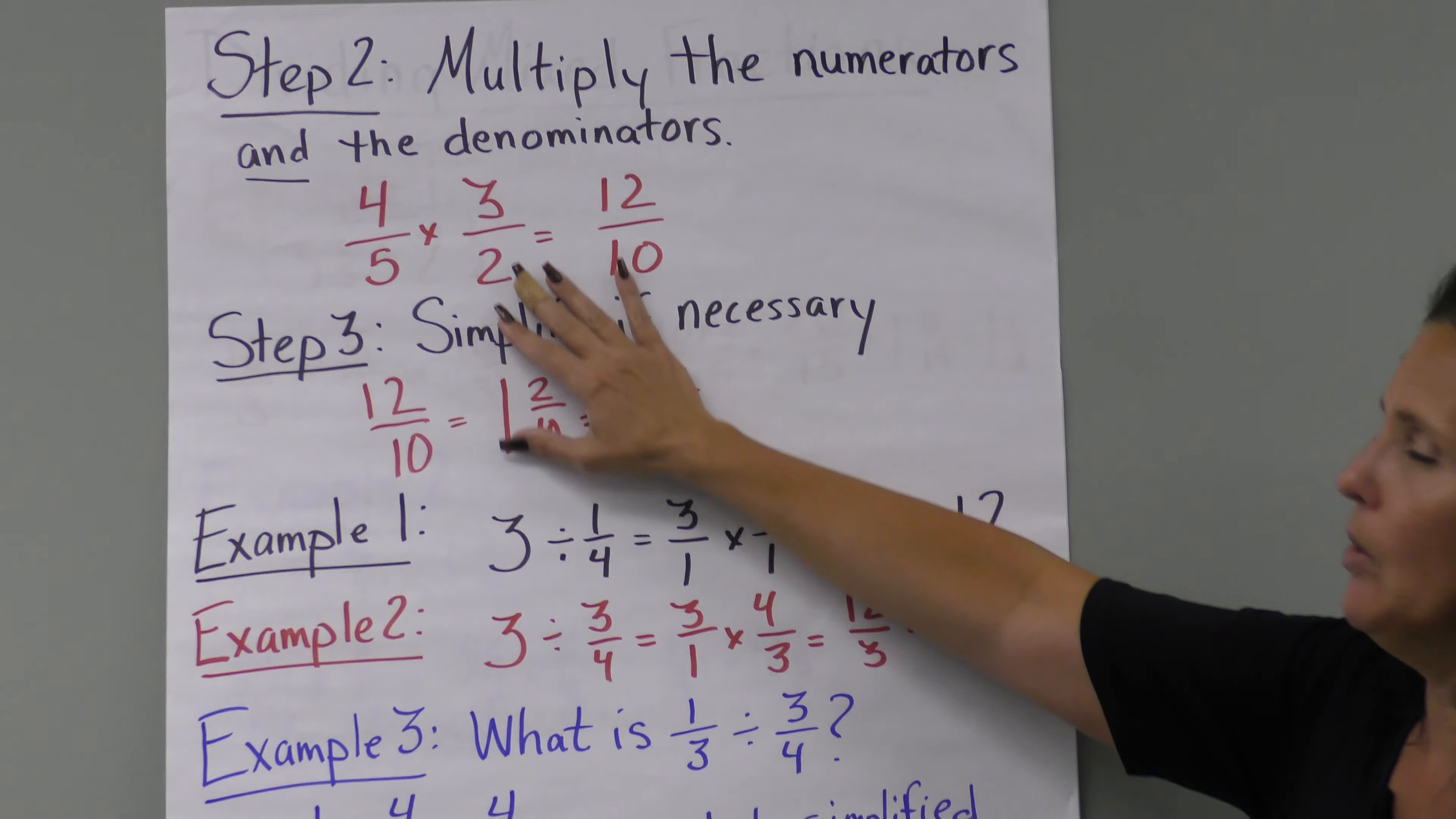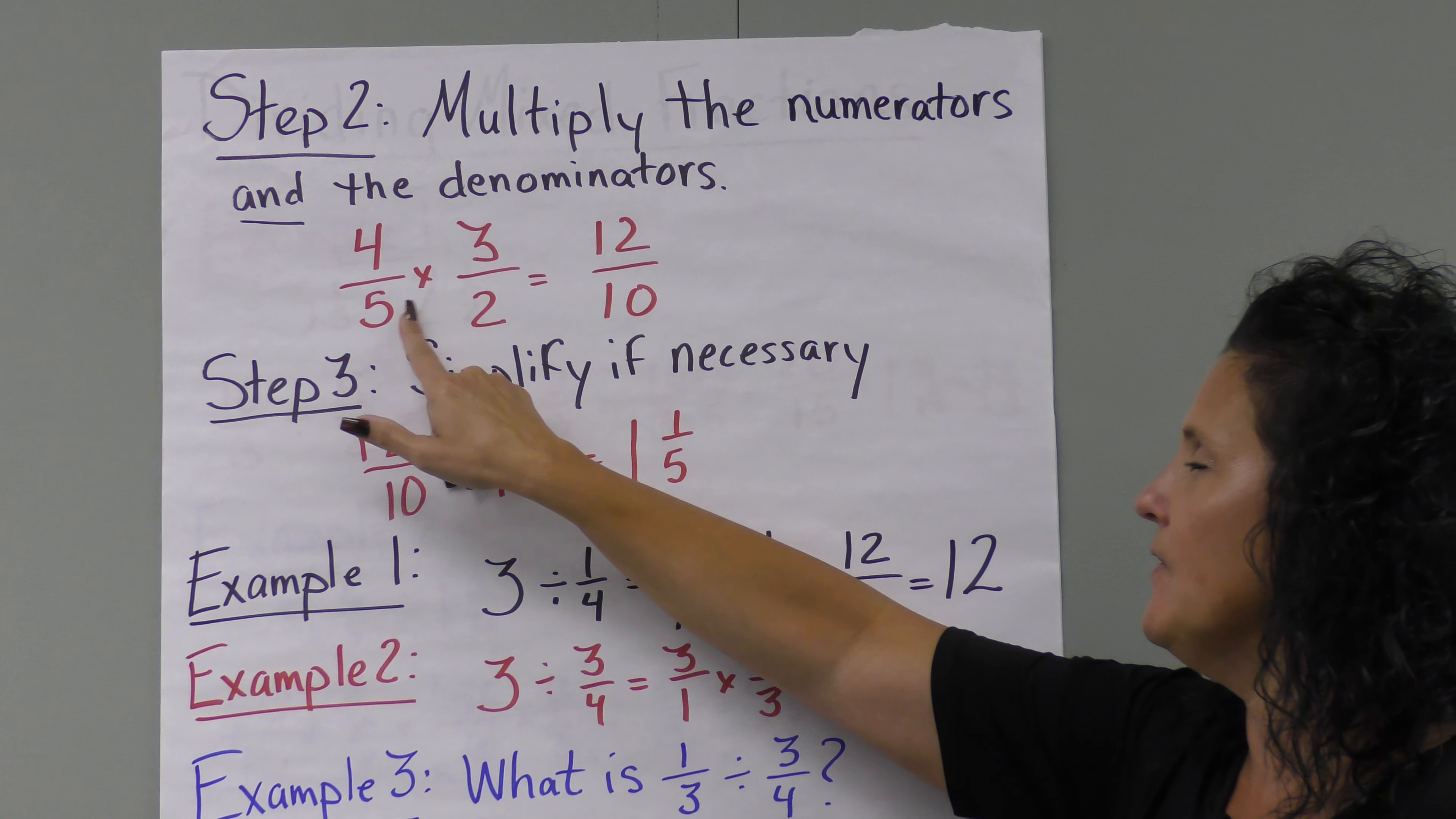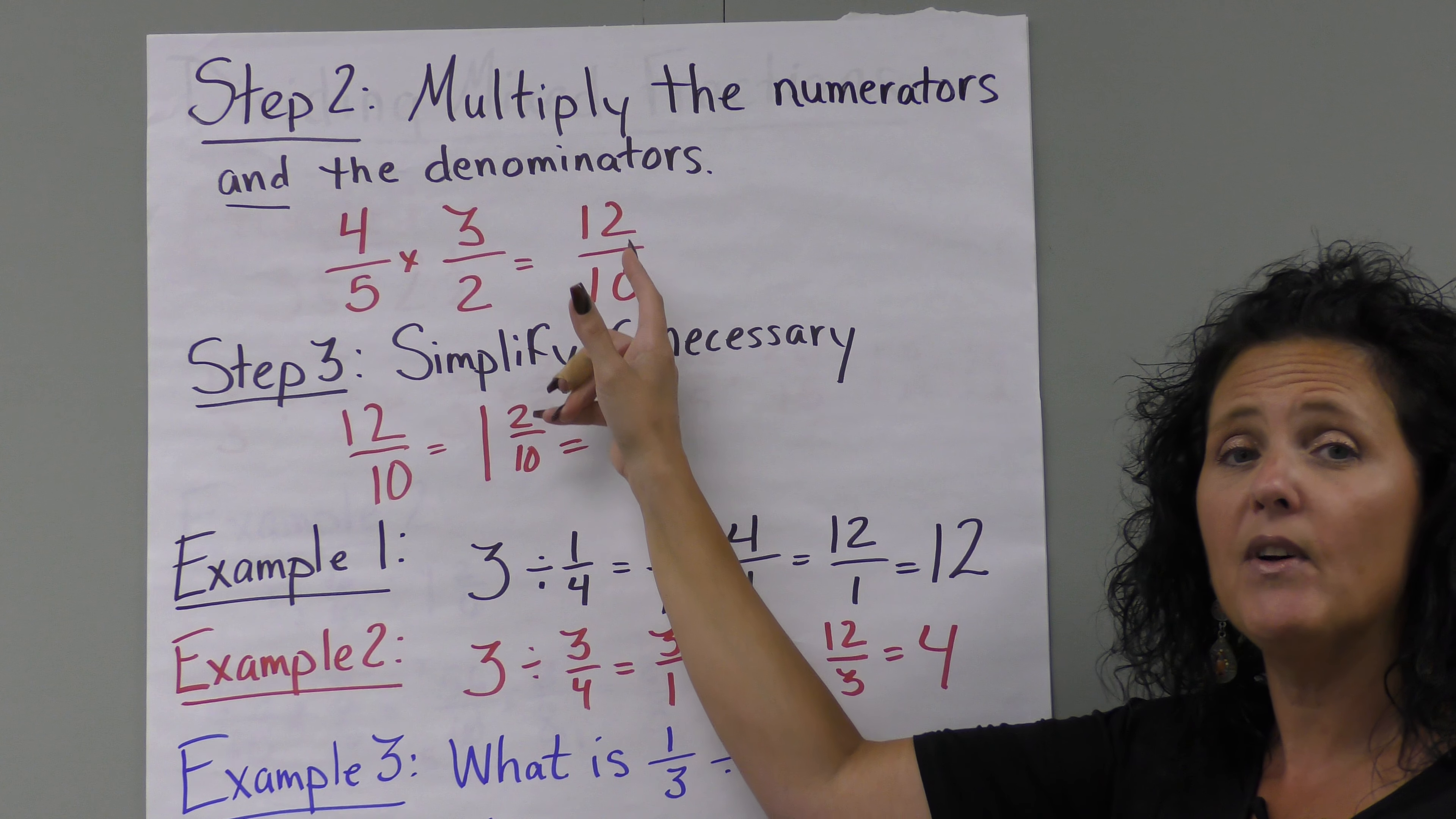Step two: once we finish that, multiply the numerators and denominators, just like when we multiplied fractions. We have four-fifths times three over two. Four times three is twelve, and five times two is ten. So we have twelve-tenths.